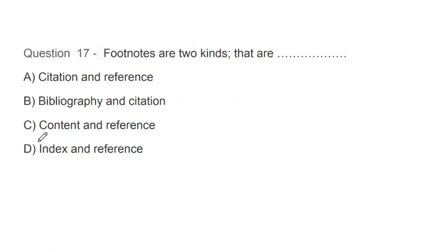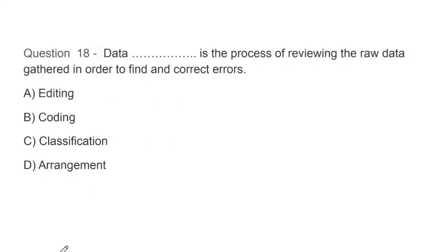Question number 17: Footnotes are of two kinds. What are they - citation and reference, bibliography and citation, content and reference, or index and reference? The correct answer is C, that is content and reference. This is not a part of statistics but you can say research methodology.